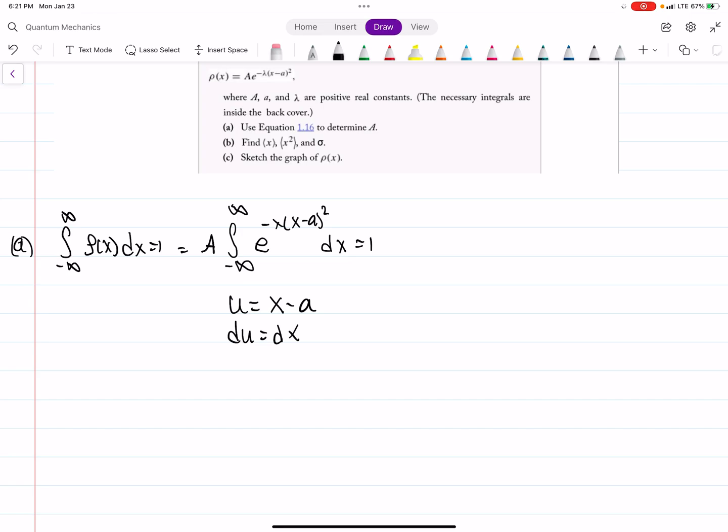u at negative infinity is still negative infinity, and u at infinity is still infinity. So we have A times the integral from negative infinity to positive infinity. Then what do we have? Well, we have our E, we still have a minus lambda there, u squared du equals 1.